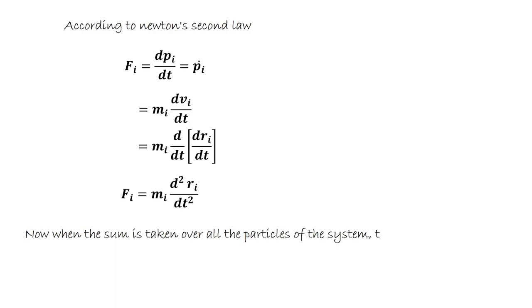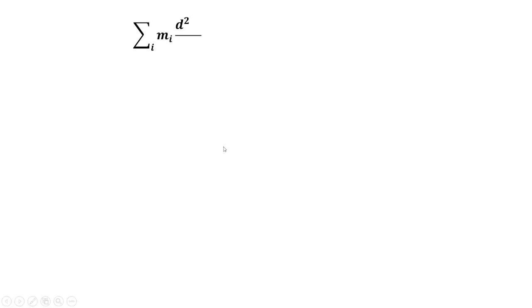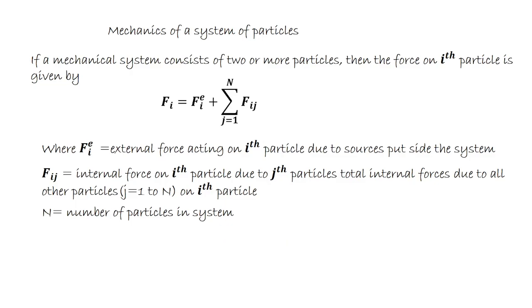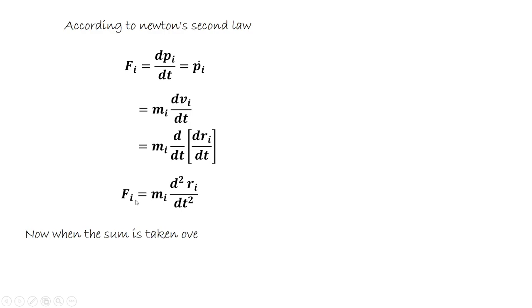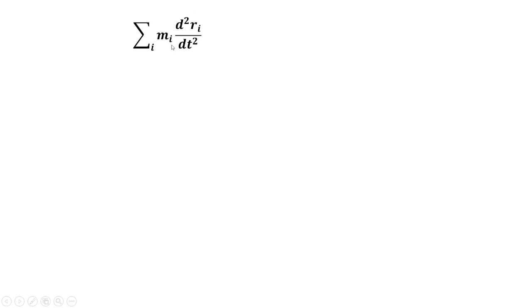Now when the sum is taken over all the particles of the system, starting from this equation where force F equals external force plus internal force, we apply Newton's second law F equals M_i times d squared R_i over dt squared. So the total force on each particle is the sum of external and internal forces.